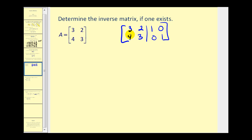To get a zero in the first target location, the corresponding element is 3. The least common multiple of 4 and 3 is 12, so we multiply row 2 by 3 and row 1 by 4, then subtract — replacing row 2 with 3 times row 2 minus 4 times row 1. For the other zero, the corresponding element is 3, the LCM of 2 and 3 is 6, so we'll replace row 1 with 3 times row 1 minus 2 times row 2.